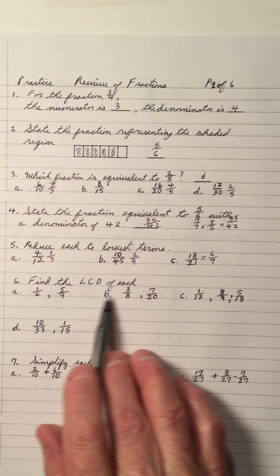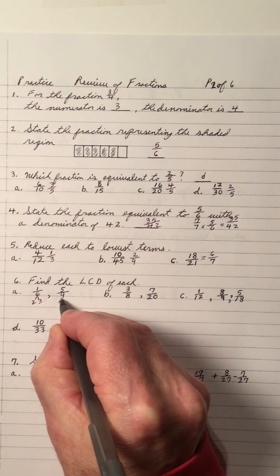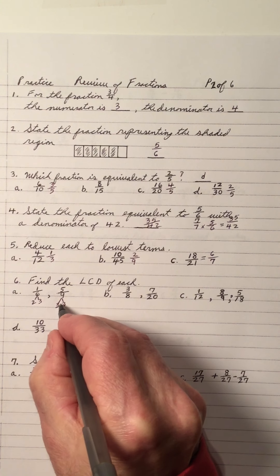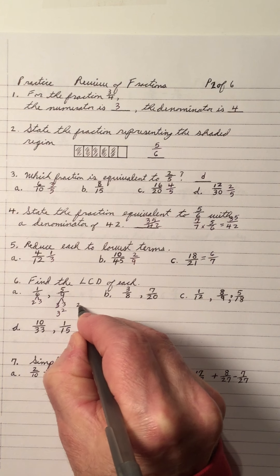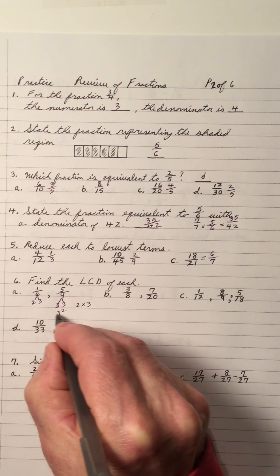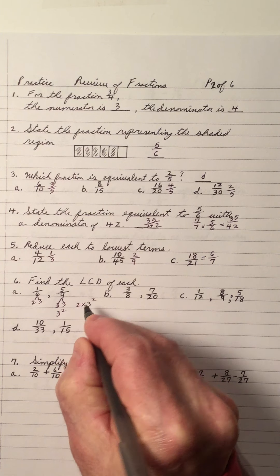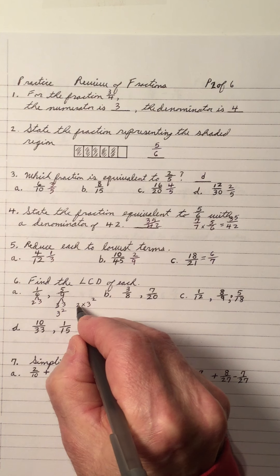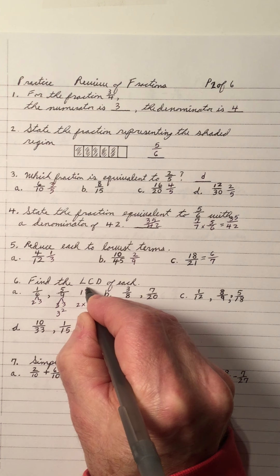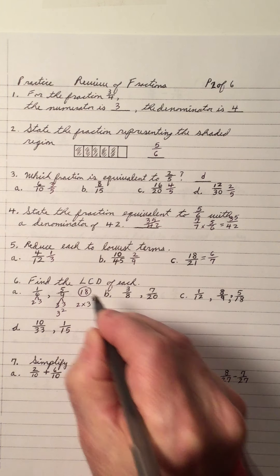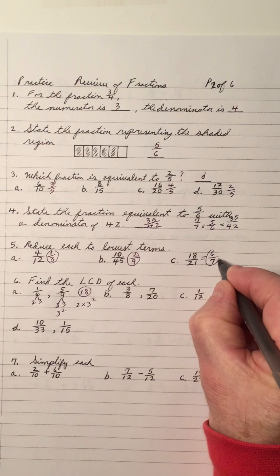Find the LCD of fractions with denominators 6 and 9. 6 is 2 times 3; 9 is 3 squared. The LCD uses a 2 and a 3, taking the highest exponent of each — so 3 squared times 2 is 9 times 2, which equals 18. The LCD is 18.